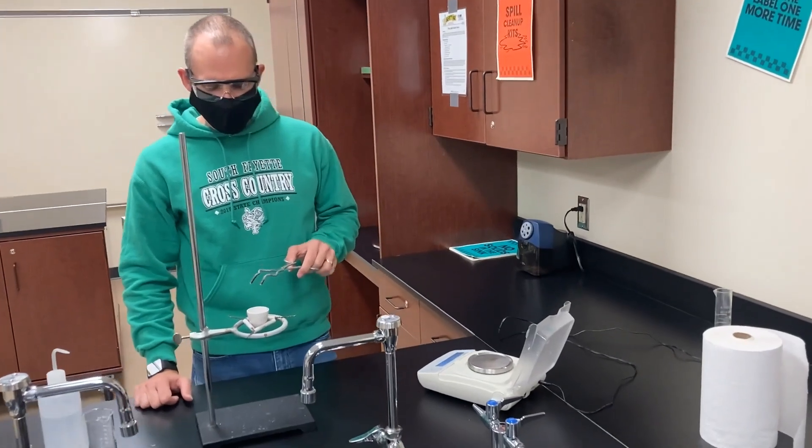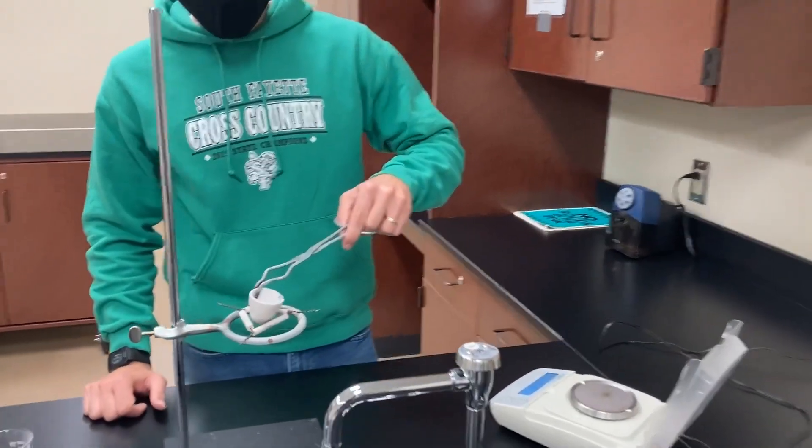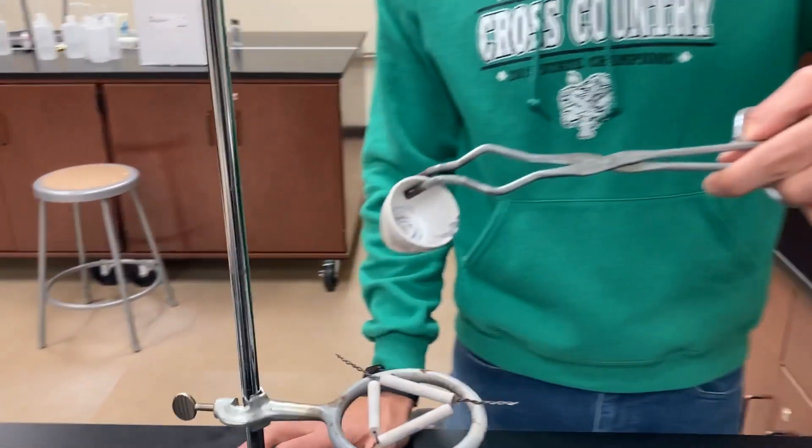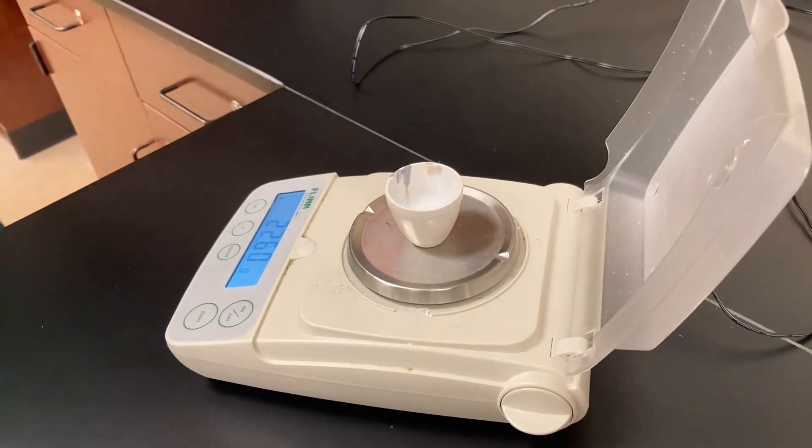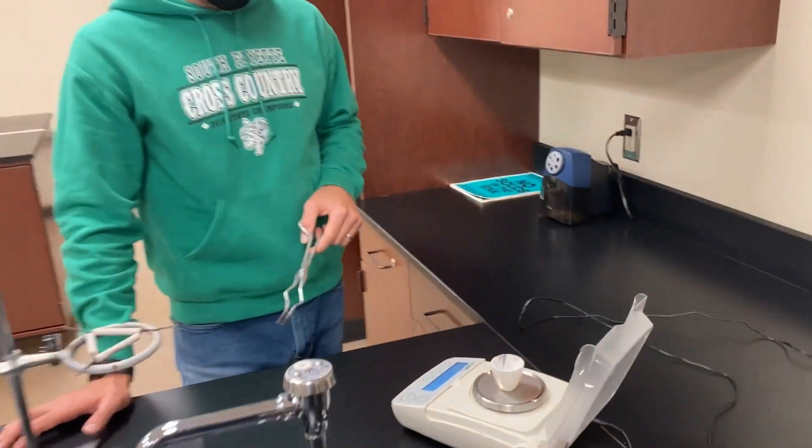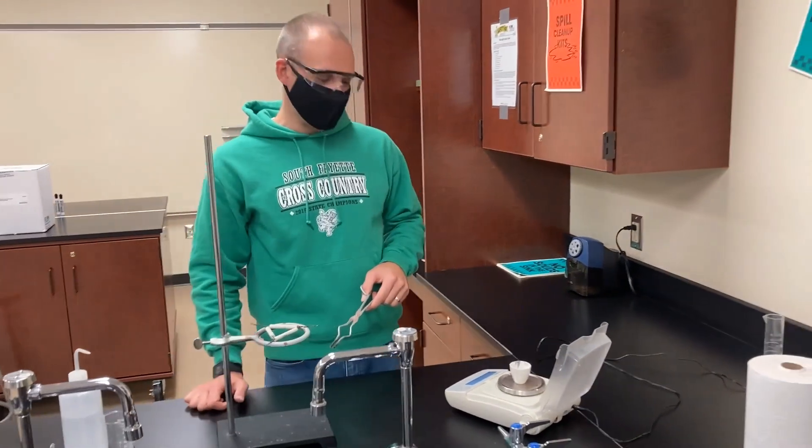So at this point we're going to take the final mass of our product here. Again, you can see after the physical change and the chemical changes that have gone on it looks different than what it did before. Crucible and our magnesium products after the reaction 22.60 grams.